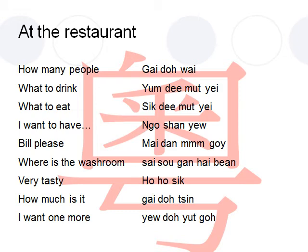If you want to ask about a particular dish how much it is, you would point to it and say in Cantonese 幾多錢. 幾多 means how much and 錢 means money, so how much money. So how much is it in Cantonese would be 幾多錢.